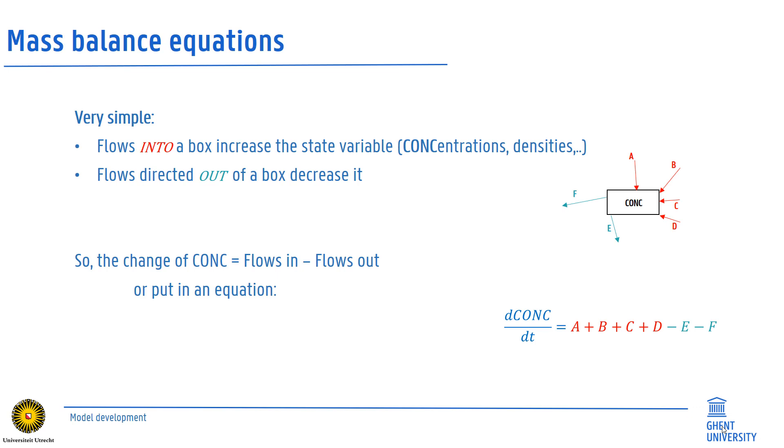For instance, we might have a state variable depicting some concentration of a nutrient. Within this scheme, several fluxes represent influxes of nutrients to the state variable. Here the red flows A, B, C and D, while two green flows represent ways by which nutrients are leaving the state variable.